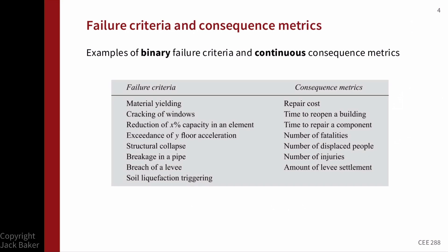To think a bit more precisely about binary outcomes, some examples of binary failure criteria include: did material yield (an indication of damage), did a component fail such as windows cracking, is there a specific amount of a continuous variable like a reduction in capacity of an element, or structural collapse. There are lots of things that could happen or not happen. When dealing with these binary failure criteria, we use a fragility function — for example, to describe the probability of material yielding as a function of ground shaking intensity.